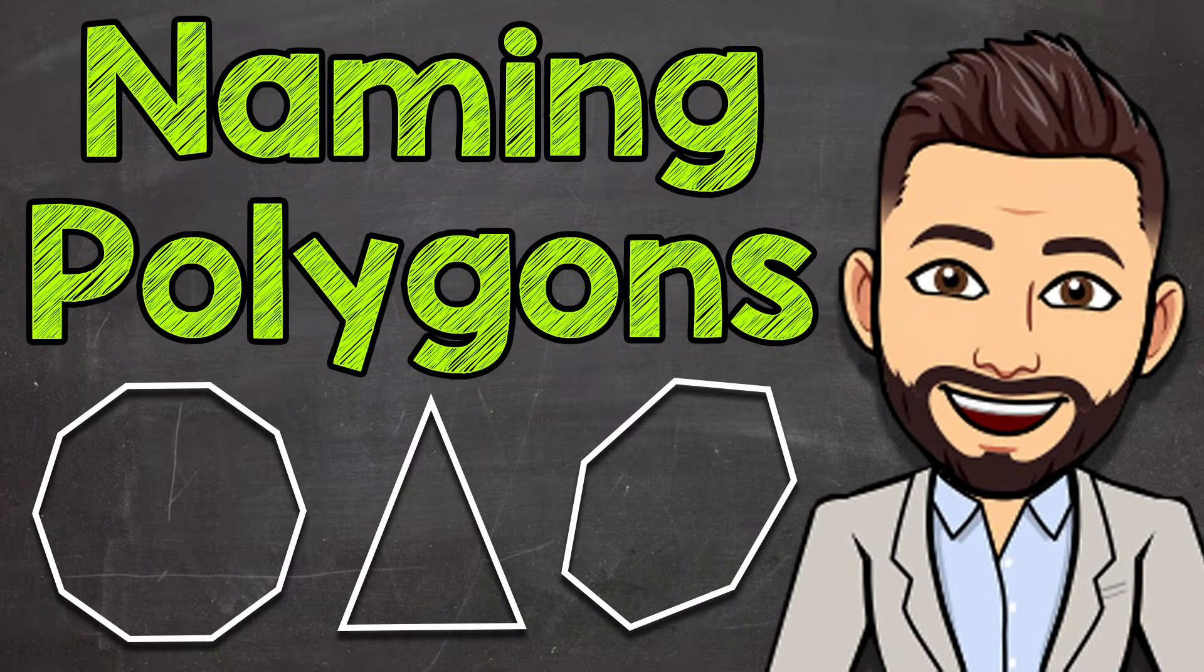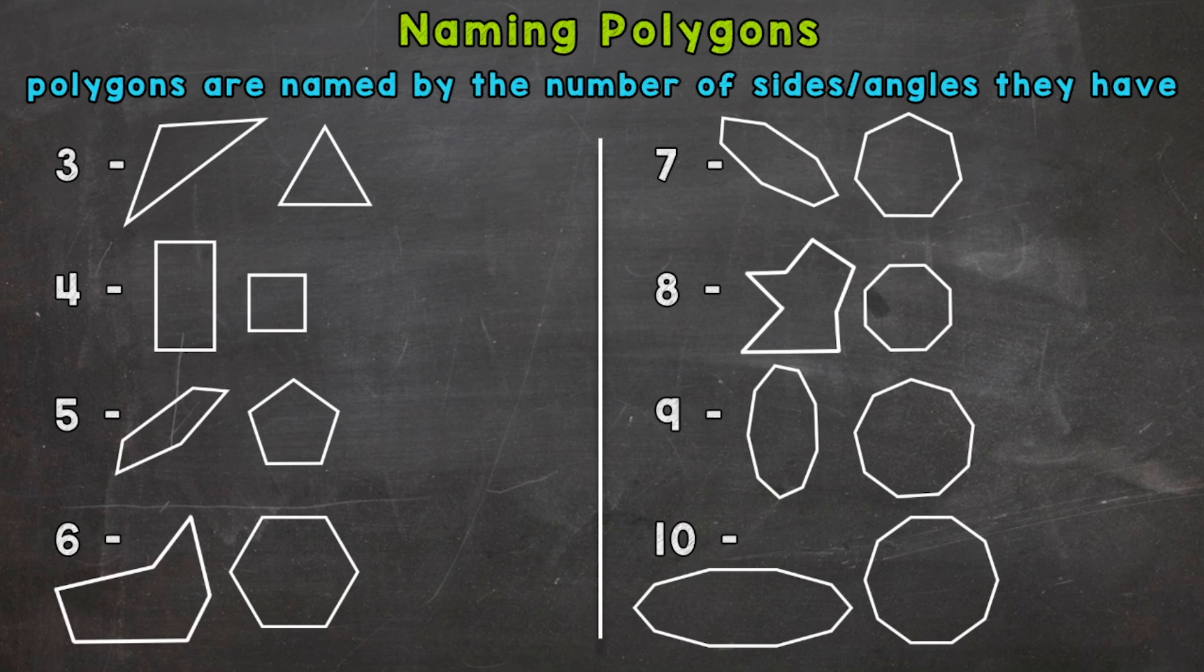Welcome to Math with Mr. J. In this video, I'm going to be covering naming polygons. Specifically, we're going to start with a polygon that has three sides and three angles, and work our way up to a polygon that has ten sides and ten angles.